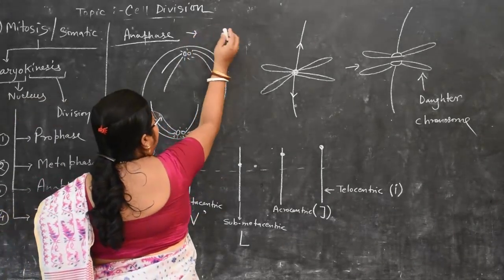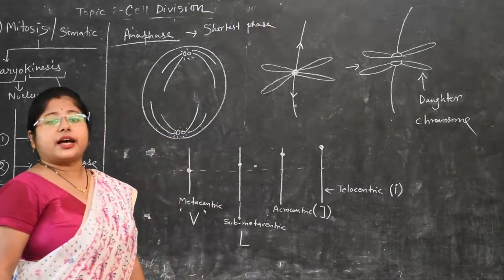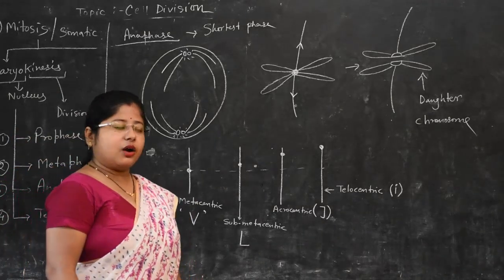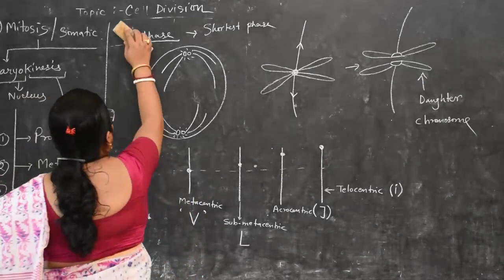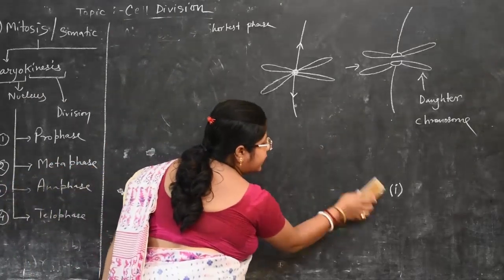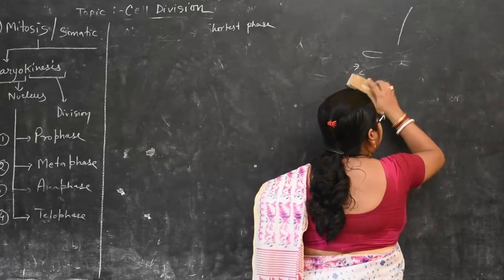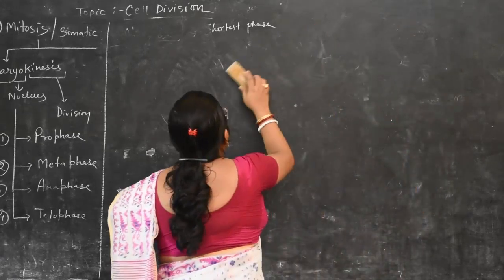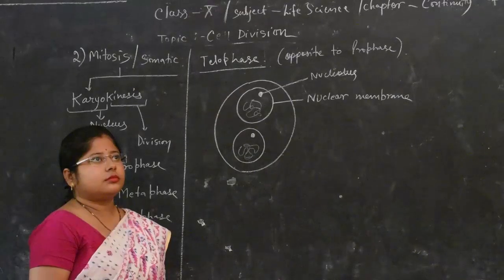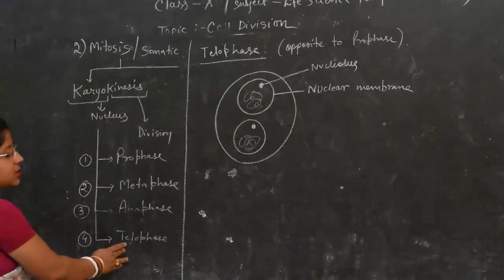The Anaphase is regarded as the shortest phase of the cell cycle. At the end of Anaphase, the daughter chromosomes have completely moved towards the two opposite poles. The last phase of Karyokinesis is Telophase.